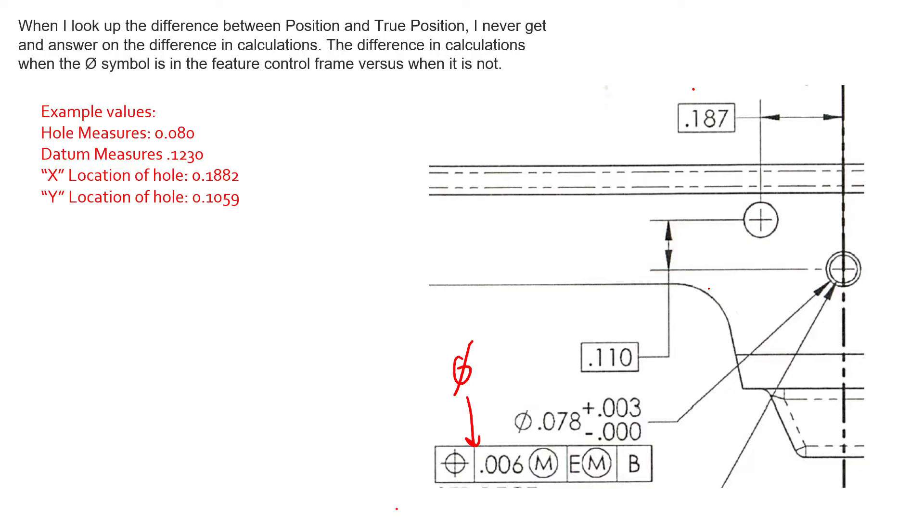So if we make that assumption, we're going to talk about the difference between position and true position. Now this drawing has both position and true position identified on the drawing itself. They are two separate entities, true position being identified as the target or ideal location of that hole with respect to the datum reference frame.